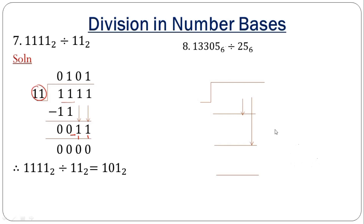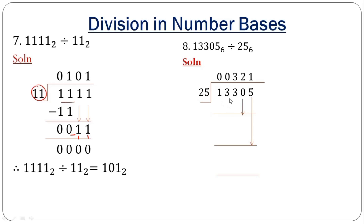The next example involves dividing in base 6. The same process applies: 25 cannot divide a single digit, so record 0. Joining the next digit, 25 still cannot divide, so record another 0. When we join the next digit to get a three-digit number, 25 can now go. But unlike in base 2, you don't automatically record 1 — you must check exactly what quotient digit it gives by using multiplication.